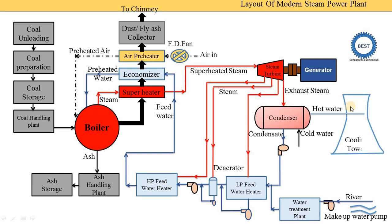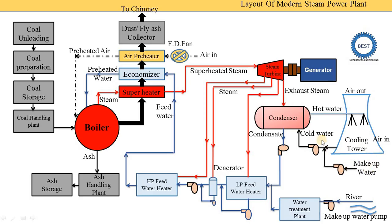In the cooling tower, hot water is sprayed from the throat portion, and air enters from the lower portion. Using atmospheric air, the hot water temperature is reduced. The cooled water is collected at the bottom of the cooling tower and pumped back to the condenser — this is the closed circuit. There is also evaporation loss in the cooling tower, so makeup water from the water treatment plant is added to compensate for this loss.